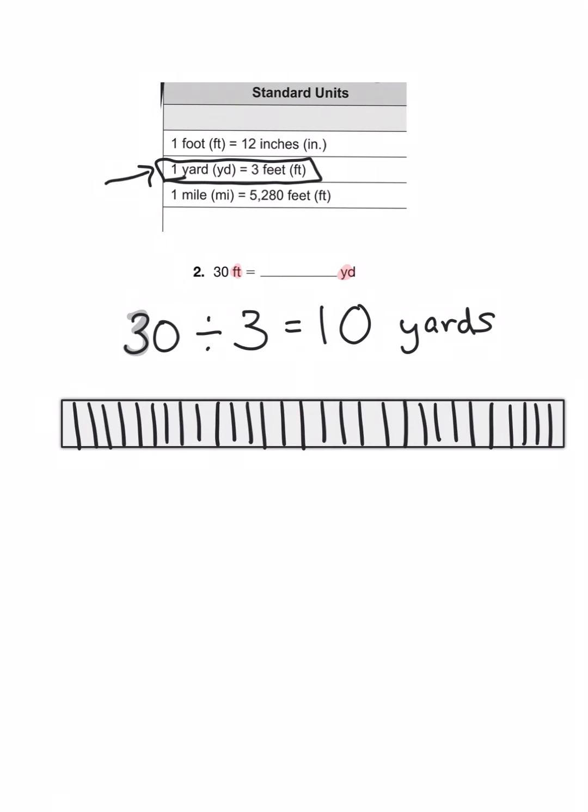Now if you wanted to see what that would look like visually, make yourself an area model like the one I have here. I just drew a really big rectangle and then I divided it into 30 equal pieces. Each of these little pieces represents one foot. So here I've got 30 feet and I'm going to put these 30 feet into groups of three. Each group of three feet equals one yard, just like I showed you in my conversion chart. So this is one yard here, this is another yard here, this is a third yard, this is another group of three feet, so that's another yard. And then I would just keep going until I ran out of feet to put into groups. When you count up each of these color blocks here that's showing you one yard, you're going to count one, two, three, four, five, six, seven, eight, nine, and ten. So that's your 10 yards right there.